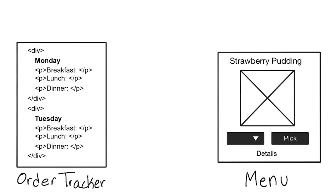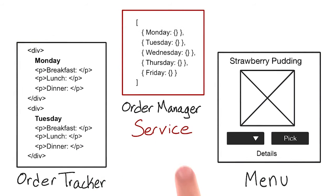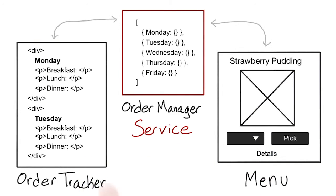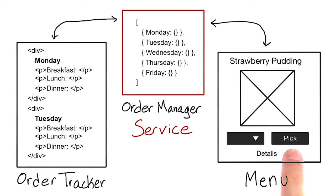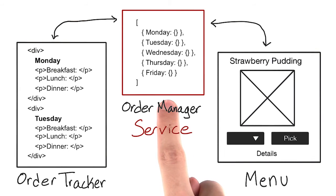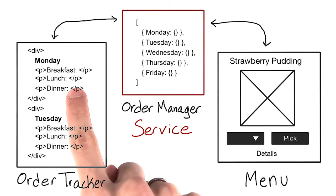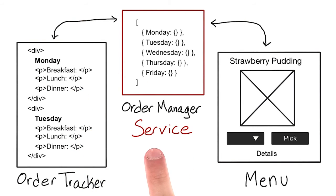This is what a service is for. An Ember service is an object that can be used by different parts of an application. If Monday is the active day, then picking strawberry pudding for lunch will update the service. The order tracker is consuming the service and will see this change and update itself. So this order management tracking feature is what we want — let's build it.